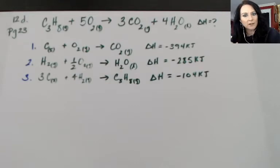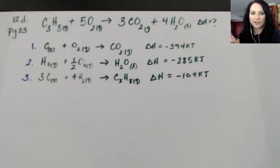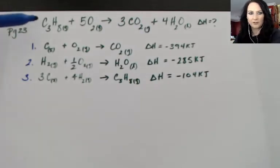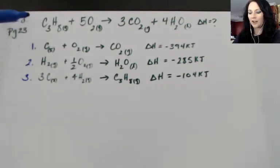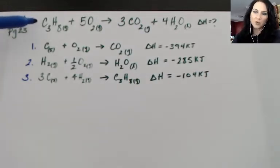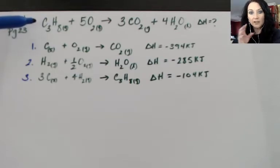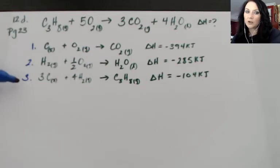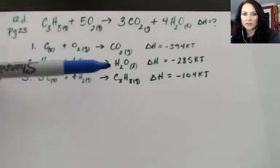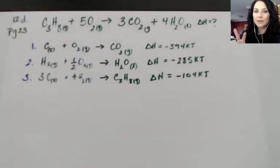If it's only appearing one time I know that that reaction I can manipulate to match this C₃H₈. I need C₃H₈ to be a reactant in my overall reaction that I don't know my enthalpy for. In equation three it appears as a product. So that's telling me that I need to reverse this reaction.